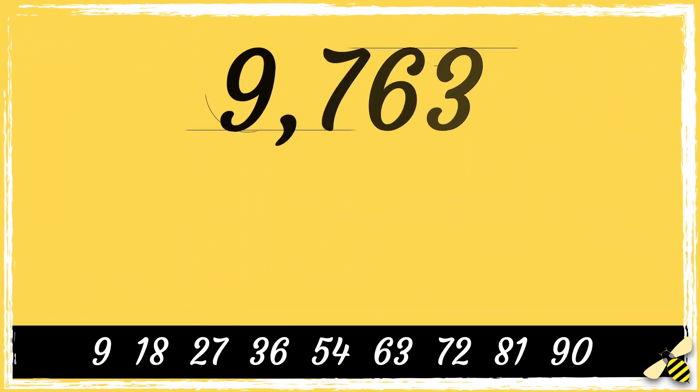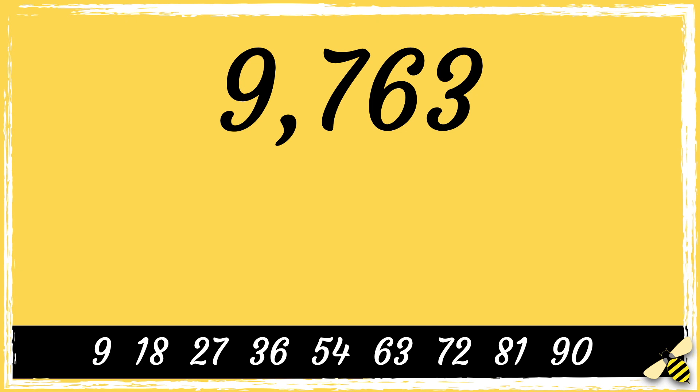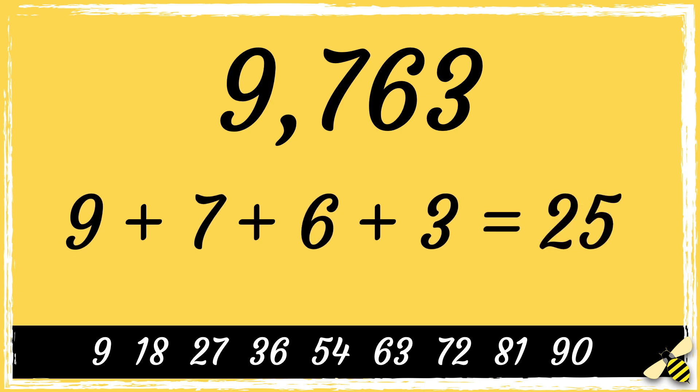Here's another one. 9763. So first, we add the digits. 9 add 7, add 6, add 3, equals 25.